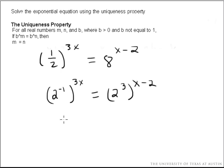I'm almost there. Let's distribute our powers. We get 2 to the negative 3x equals 2. And remember, I'm going to distribute that 3 to both terms. 2 to the 3x minus 6.